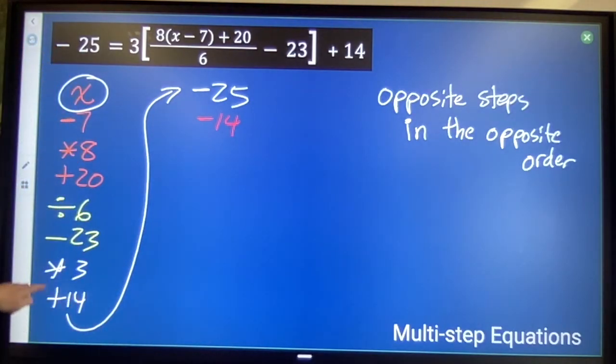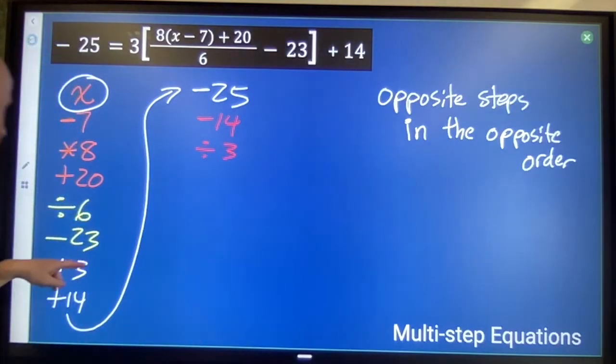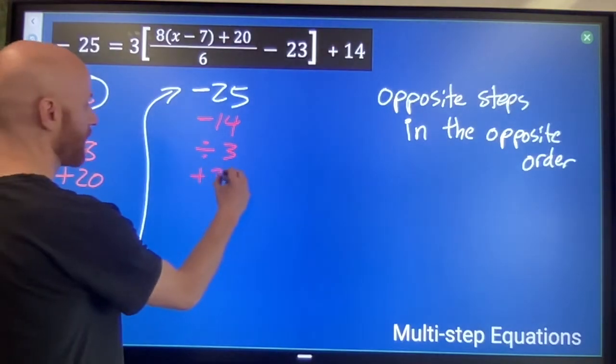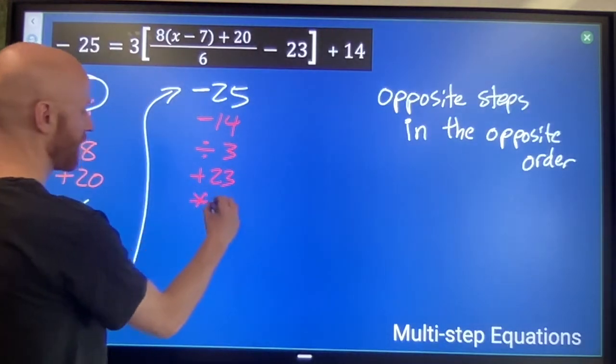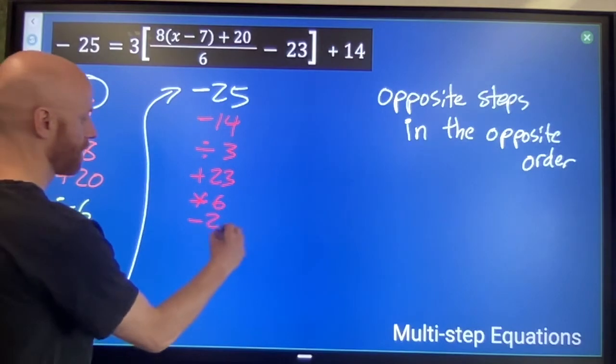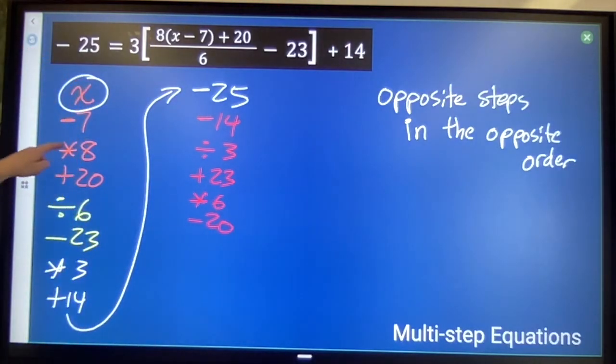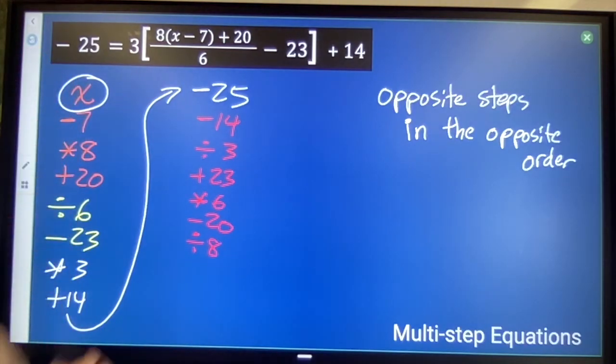Instead of times 3, divide by 3. Instead of minus 23, plus 23. Instead of divide by 6, times 6. Minus 20, divide by 8, plus 7.